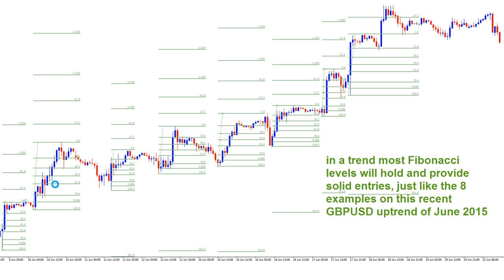There are certain moments where price will not work as well with Fibonacci as in a trend. Those moments are consolidations, corrections, ranges, and sideways moves — because then the Fibonacci levels are mostly ignored. Price is more responsive to different levels like bottoms and tops in those conditions.